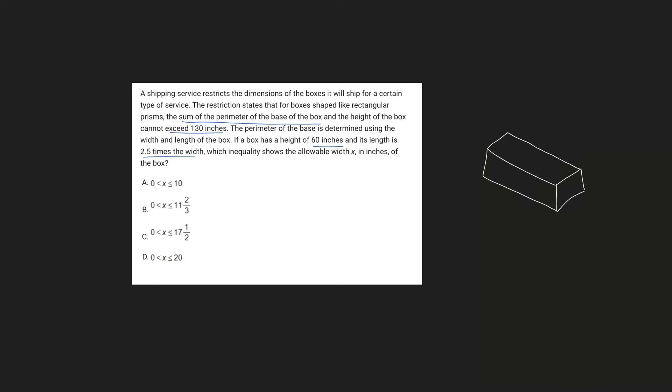All right, so first off, let's label our diagram. We know the height given is 60 inches, so let's just write 60 out here. And then they also give us the width, which is x, but we don't really have a value for x, so we'll just label x out here. We know the length is 2.5 times the width, so we just write this as 2.5x.